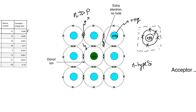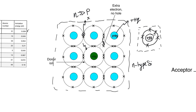Notice that the material overall, if we draw a black box around the entire material, it is still going to be electrically neutral — the net charge is zero. Any electron freed by thermal generation is balanced out by the hole it leaves behind, so the net charge is still zero. When an electron is freed from the donor atom, the donor atom is left forming four covalent bonds with the surrounding silicon atoms.